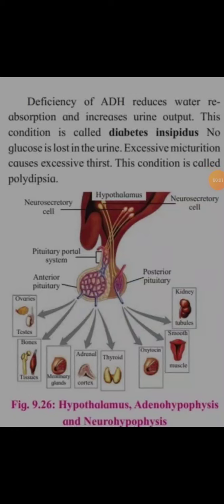Now see the structure of the hypothalamus, adeno-hypophysis and the neuro-hypophysis. So this is the hypothalamus. In the hypothalamus, the neurosecretory cells are present. Then this is the pituitary, anterior pituitary and the posterior pituitary, and above the pituitary is the pituitary portal system.